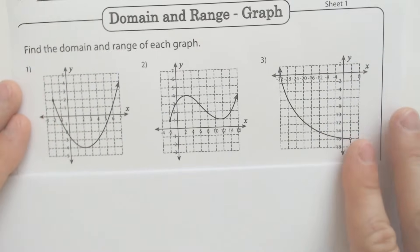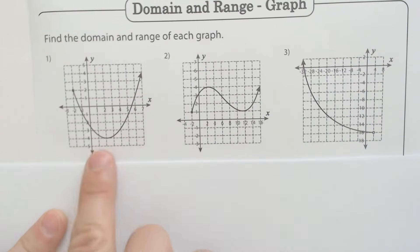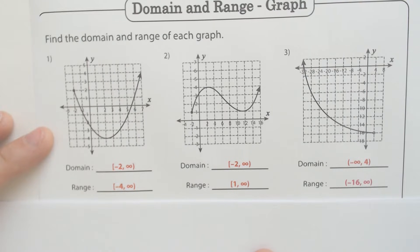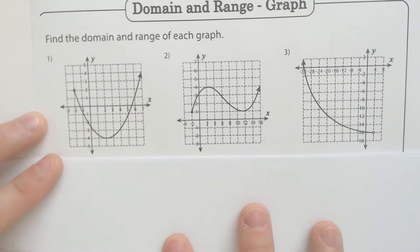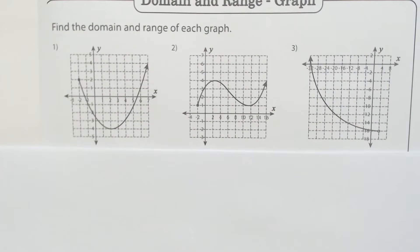All right, so yesterday, or on a different video, we did the domain and range of these. There's the answer key. Take a screenshot if you're interested. But there's another video showing you how to get it. But I'm going to use these same graphs to figure out when is the graph going to be going up and when is it going down, which is increasing and decreasing. And then when is it positive and negative?